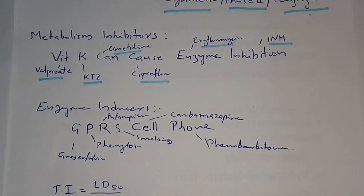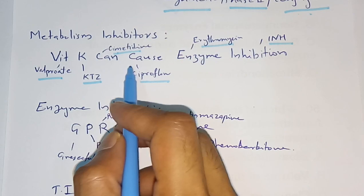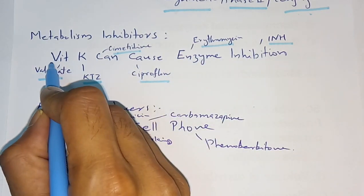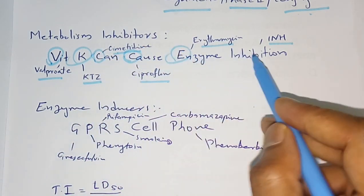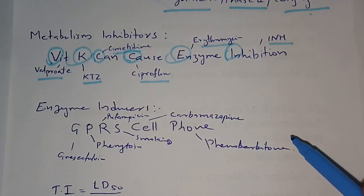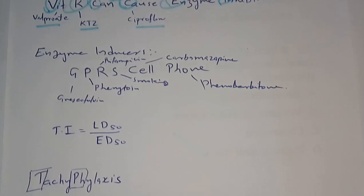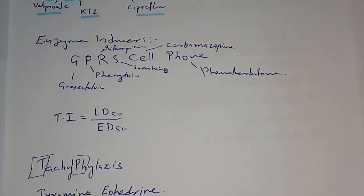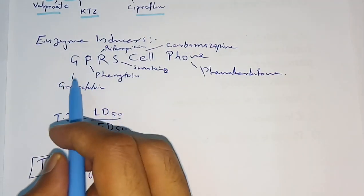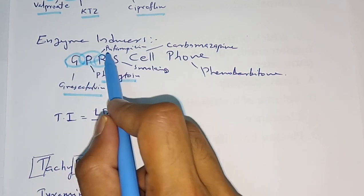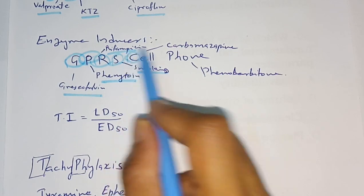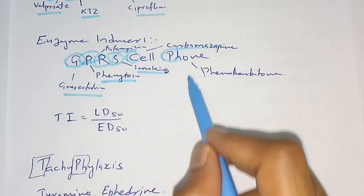You can remember enzyme inhibitors by the mnemonic 'Vitamin K causes enzyme inhibition': V for valproate, K for ketoconazole, C for cimetidine, C for ciprofloxacin, E for erythromycin, I for INH (isoniazid). For enzyme inducers, use the mnemonic 'GPRS cell phone': G for griseofulvin, P for phenytoin, R for rifampicin, S for smoking, C for carbamazepine, P for phenobarbitone.